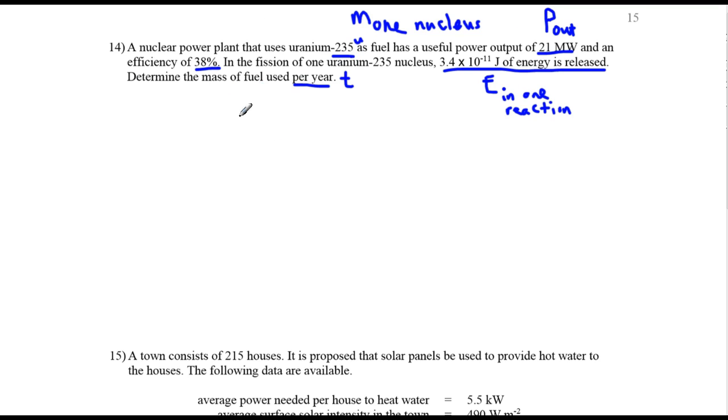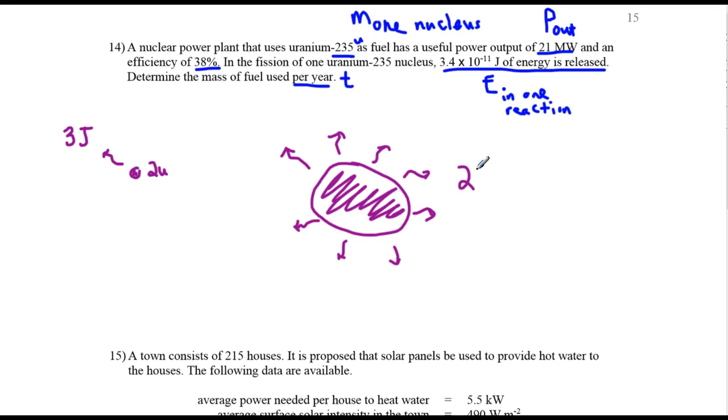Okay, I want to make up some numbers to illustrate the method we used for this problem. Some simple numbers. Alright, here's one nucleus. It gives off 3 joules of energy when it fissions. What's its mass? 2u. These are obviously wrong values, I'm just making up some numbers. And then over here, here's the mass that we use in one entire year. Here's the entire year's worth. And how much does it give off? It gives off a total of 24 joules. And we have to find the mass of the whole thing.